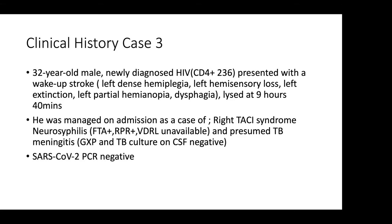Let's look at the next case. A 32-year-old male, newly diagnosed HIV CD4 236, presented with a wake-up stroke, left dense hemiplegia, left hemisensory loss, left extinction, left partial homonymous hemianopia and dysphagia, lysed at 9 hours and 14 minutes. He was managed on admission as a case of a right thalamic syndrome. Neurosyphilis was presumed but a VDRL was unavailable at the time, and a presumed TB meningitis, but TB culture and GeneXpert were negative. The SARS-CoV-2 PCR ultimately was negative.